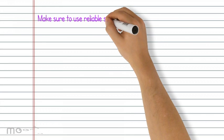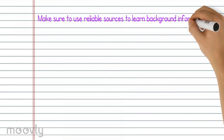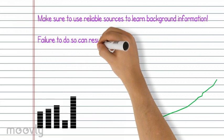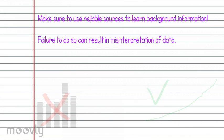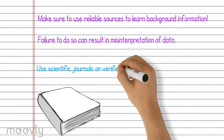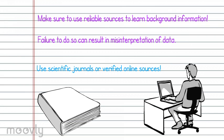Make sure you use reliable sources to learn background information. Failing to do so can result in a misinterpretation of your data. Scientific journals and verified online sources tend to be used best.